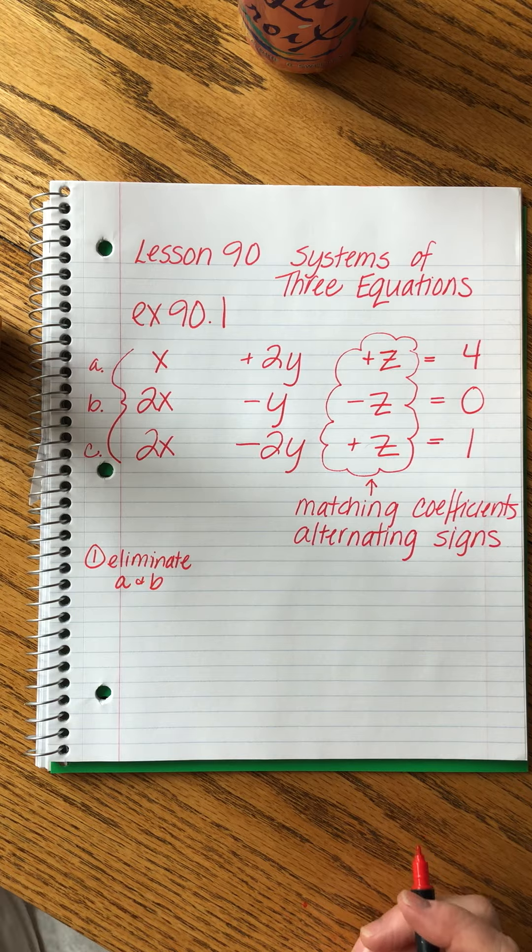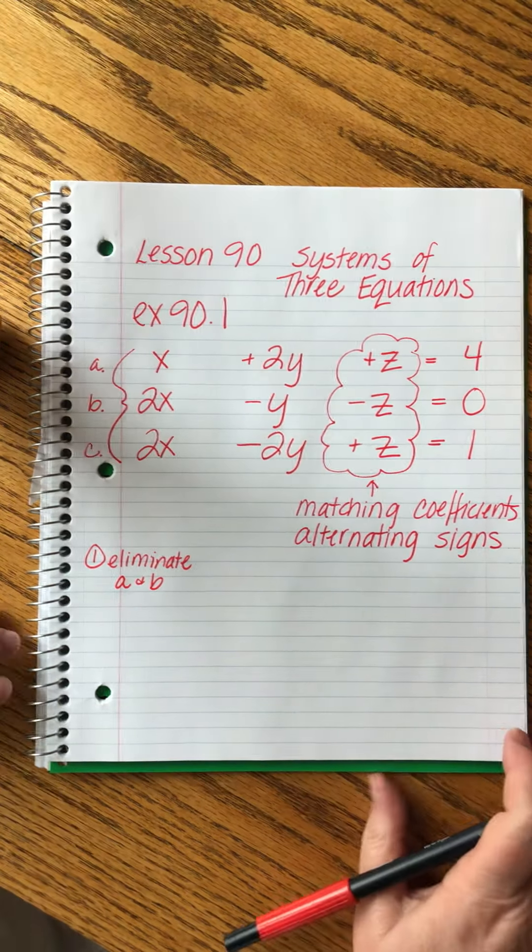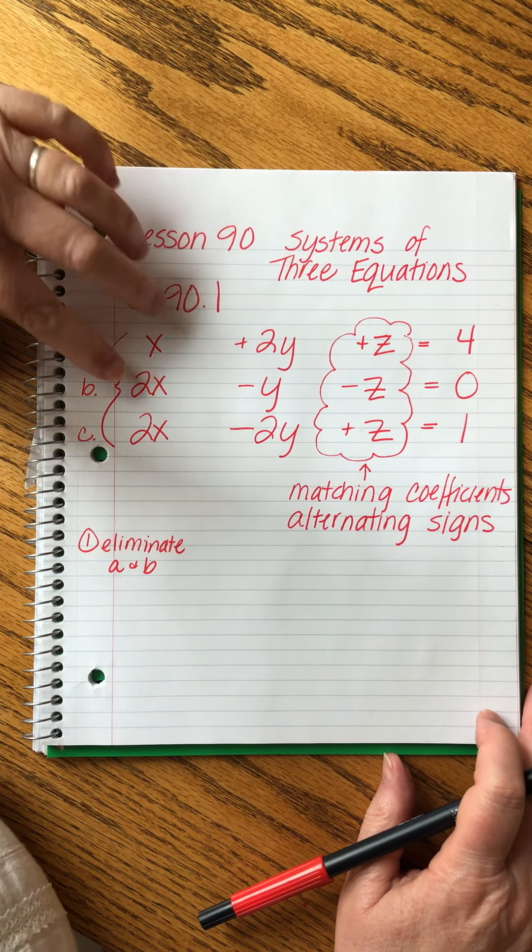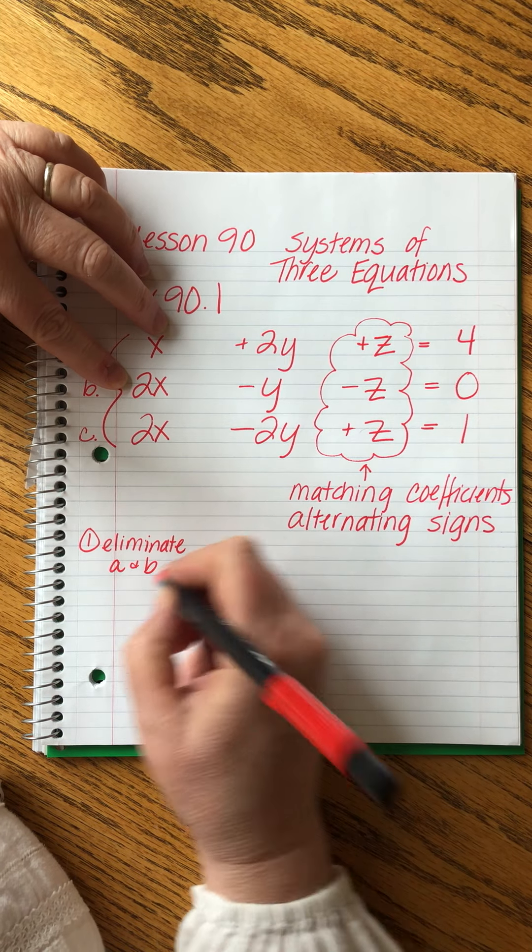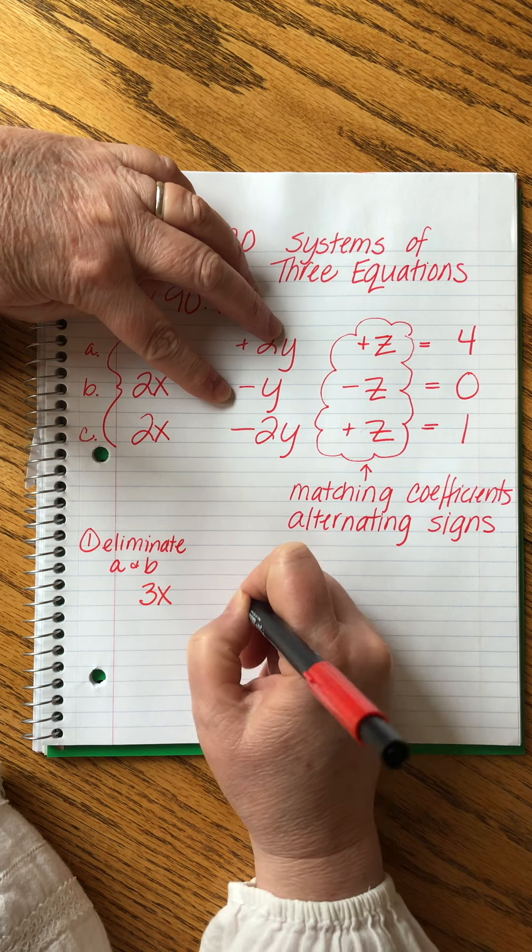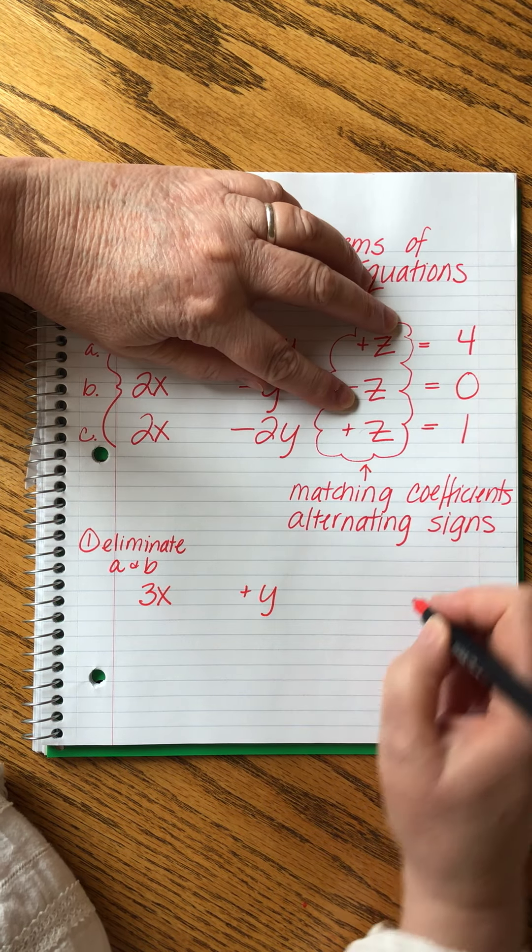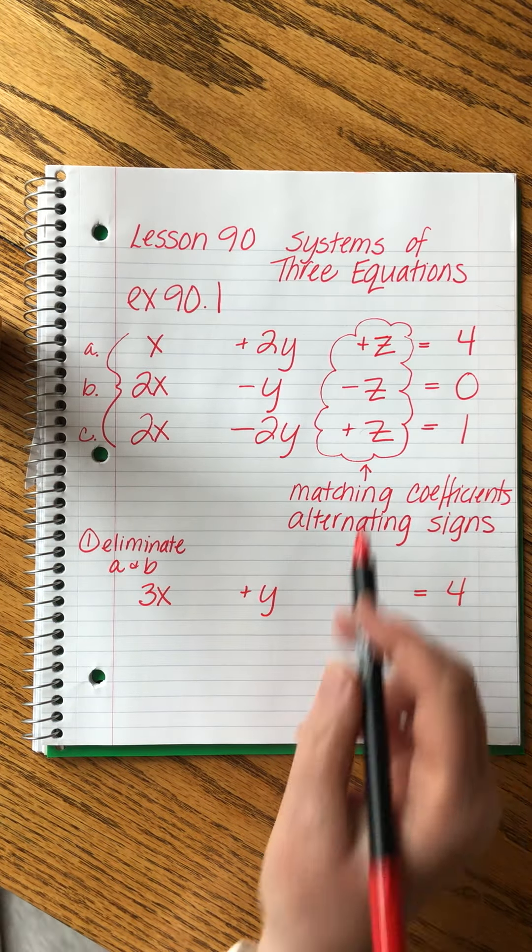So my step one, I'm going to eliminate A and B together. I'm not going to rewrite them. I'm just going to look up here and I can do it without rewriting it. So if I add together A and B, then I will have 3x plus y. There will be no z. And my final answer will be four. The z's cancel out.